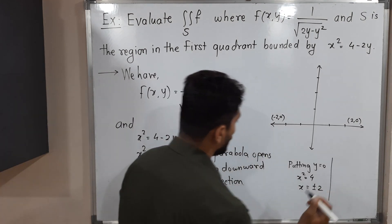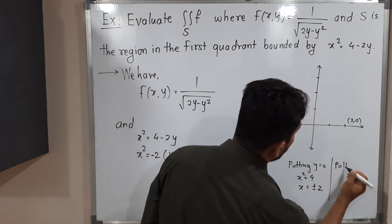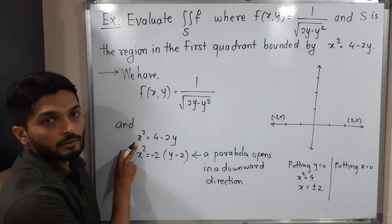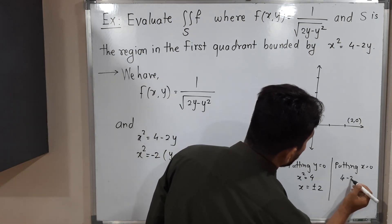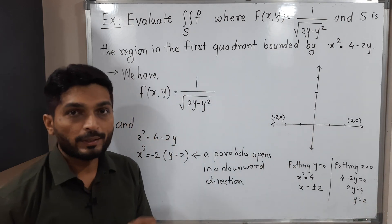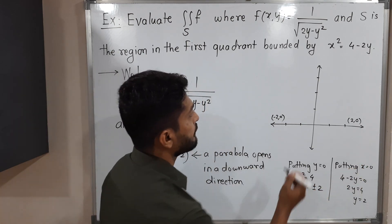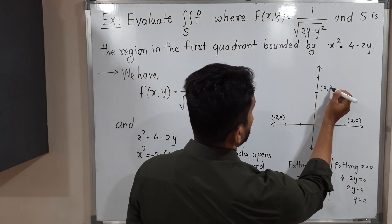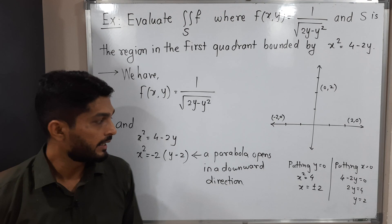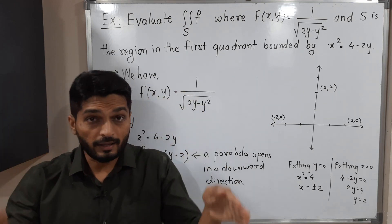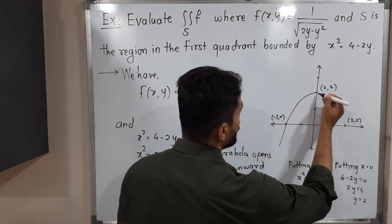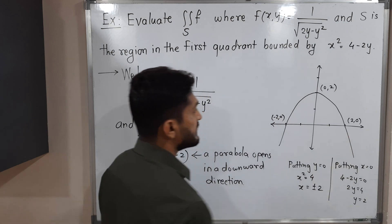Similarly, putting x = 0: we get 4 − 2y = 0, so 2y = 4, meaning y = 2. So the next point is (0, 2). The given parabola passes through this point as well as the previous two points. Since it opens downward, we can draw the parabola. The equation is x² = 4 − 2y.